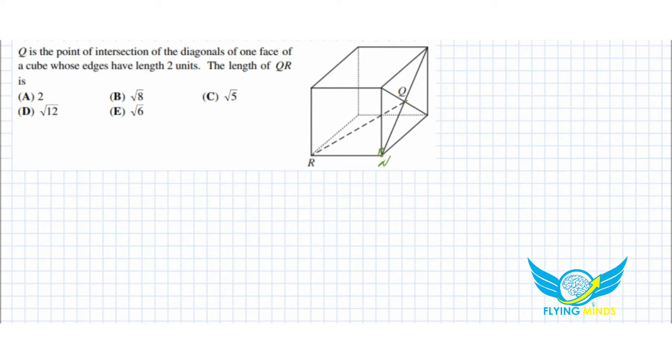To be able to find RQ, we need to know length of RN and NQ. RN is given to us is two units. So we need to figure out NQ.